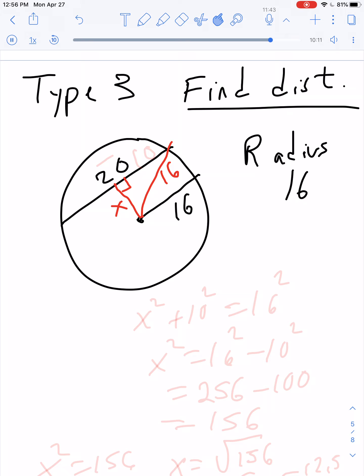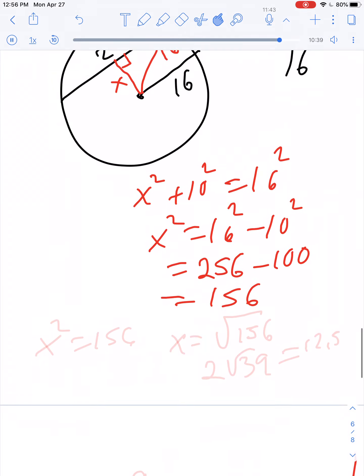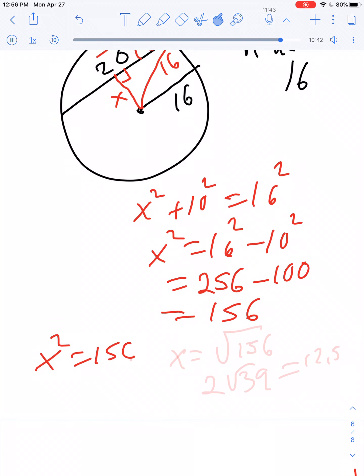So now with this right triangle up here, if the whole thing is 20, this piece here would have to be 10, that little piece. So then we have X squared plus 10 squared equals 16 squared. So X squared is 16 squared minus 10 squared, which is 256 minus 100, or 156. So then X squared is equal to 156. X, then, is the square root of 156. And once again, you could use a decimal there. That's the same thing as 2 times the root 39, which is approximately 12 and a half.